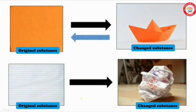But after some time, we will get the original substance by unfolding it. So these types of changes are known as reversible change.